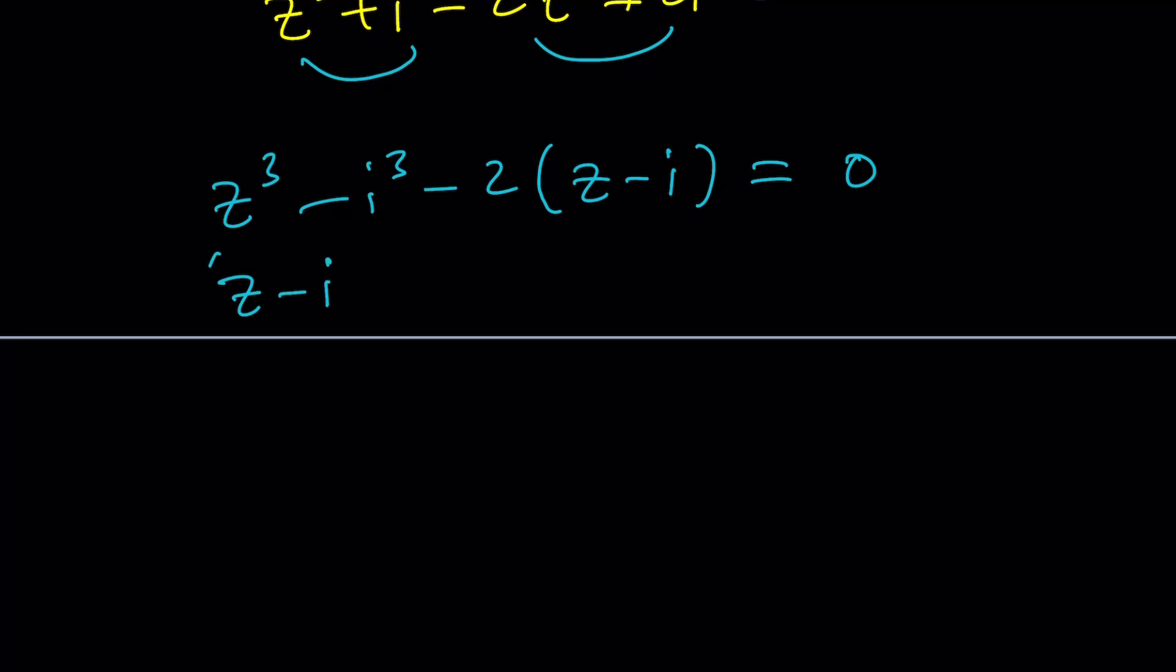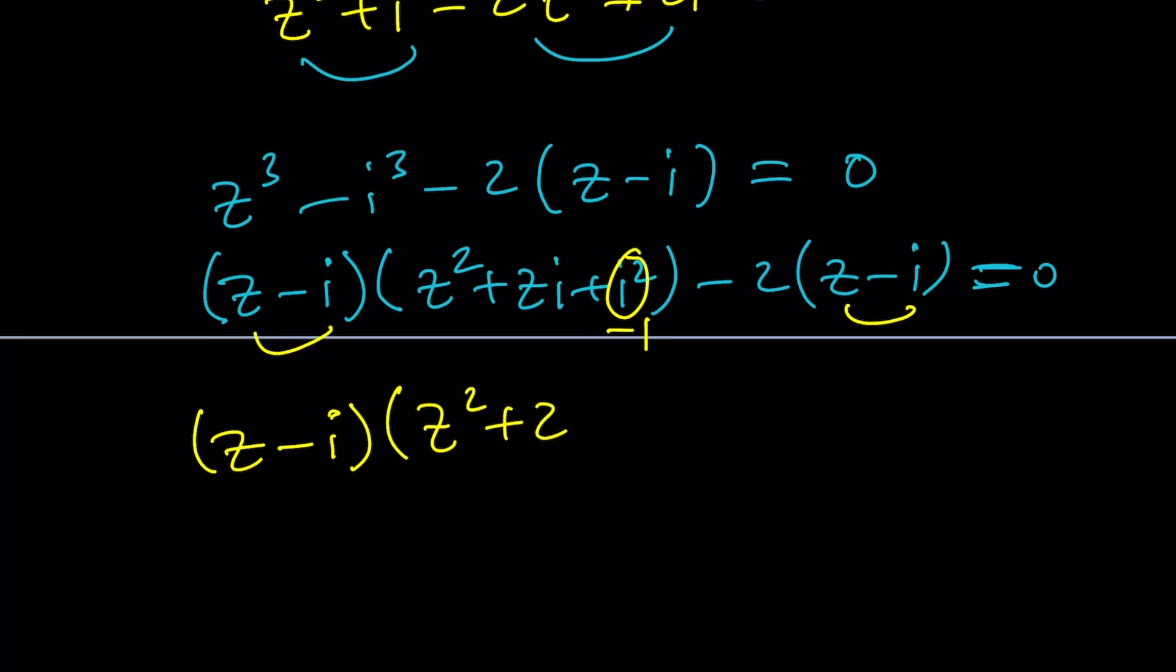Now I can go ahead and factor this as Z minus I multiply by Z squared plus ZI plus I squared. Remember the difference of 2 cubes, and then minus 2 times Z minus I. This shows indirectly that Z equals I is a solution because factor theorem tells us that if Z equals I is a solution, then Z minus I is a factor. Looks like Z minus I is a factor, which is cool. And then I can go ahead and factor that out. But look, I squared is negative 1. So I can go ahead and replace it with negative 1.